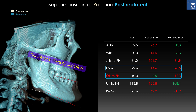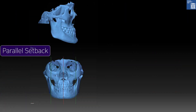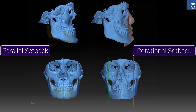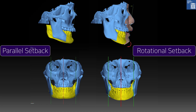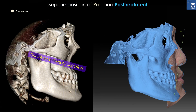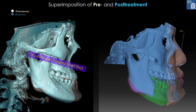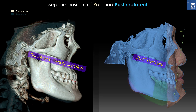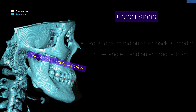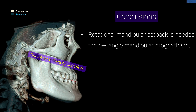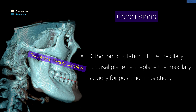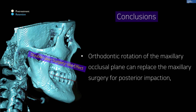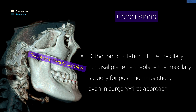This rotational setback effect was possible only with double jaw surgery previously. In low angle patients, parallel mandibular setback cannot improve the square chin contour; therefore, rotational setback is needed in low angle prognathism. For post-surgical rotation of the maxillary occlusal plane in a surgery-first approach, Class 2 open bite should be established by surgery, and corrected during post-surgical orthodontic treatment. Conclusions: Rotational mandibular setback is needed for low angle mandibular prognathism. Orthodontic rotation of the maxillary occlusal plane can replace maxillary surgery for posterior impaction, even in a surgery-first approach. Thank you.